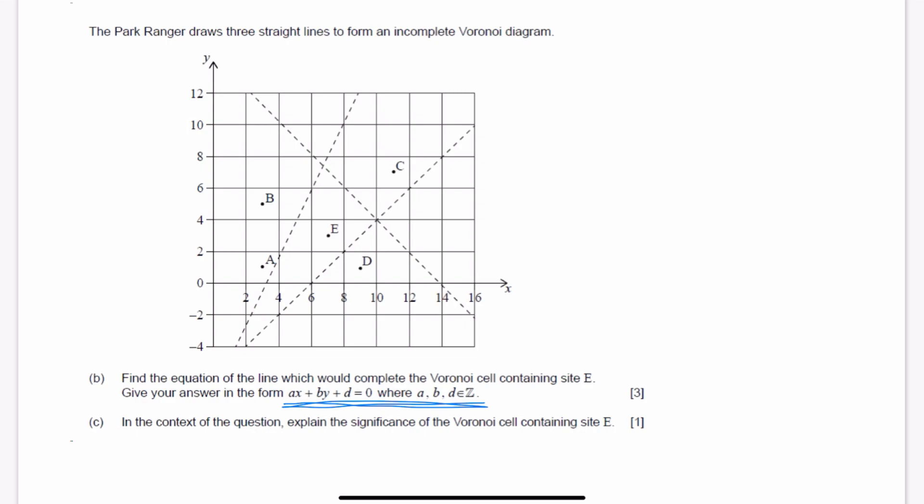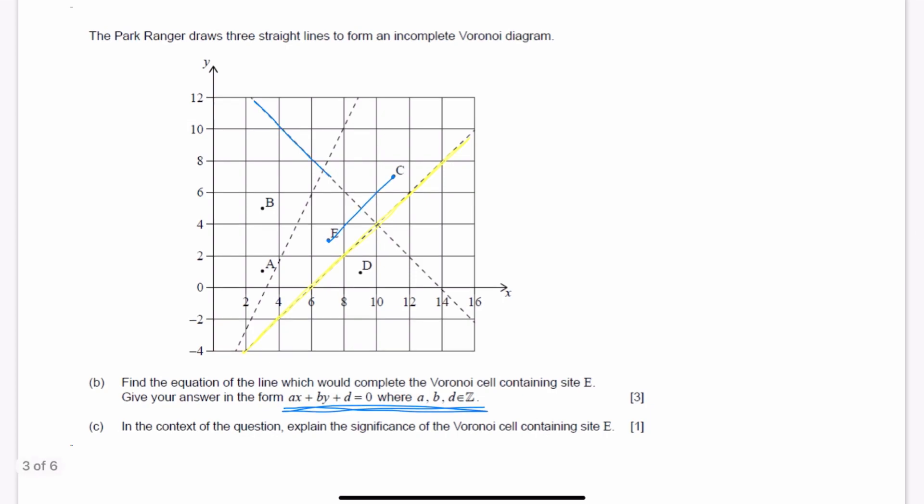So we're talking about edges. Edges are the perpendicular bisectors between two sites. For example, for sites E and D, if I were to connect these with a straight line, the perpendicular bisector is going to be right here in yellow. So that's the perpendicular bisector for E, D. That means that for E, D, I already have the perpendicular bisector. Let's talk about E, C. If I do E, C, this is the line that connects E, C. So the perpendicular bisector is going to be this long one right here, which means that so far we have the edge of E, D and E, C.